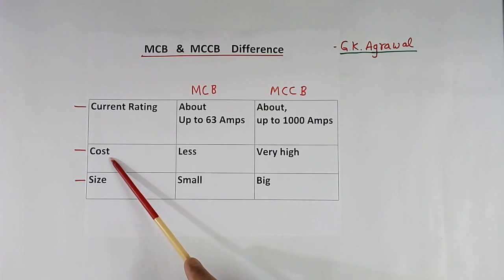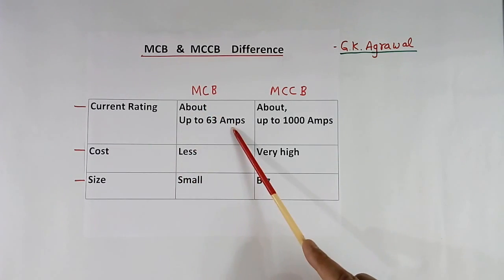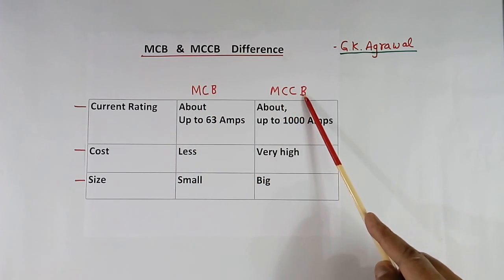Then cost. MCB cost is less because current ratings are less. MCCB cost is very high.